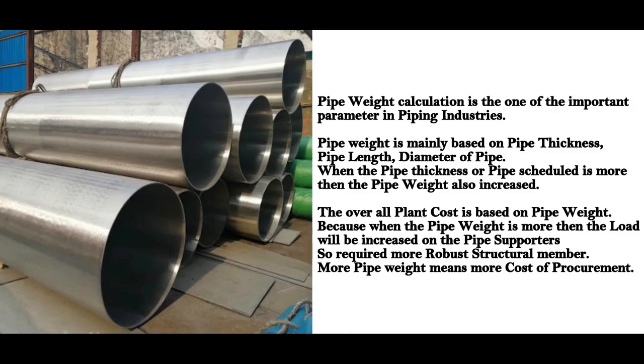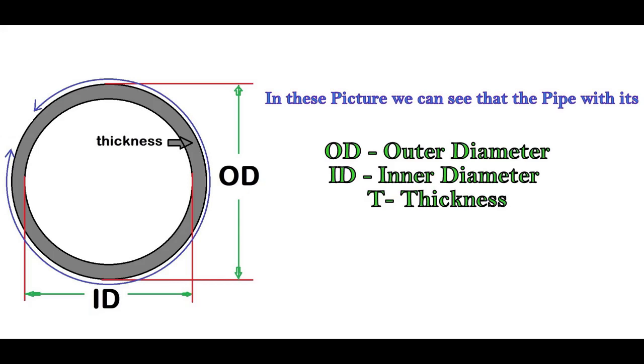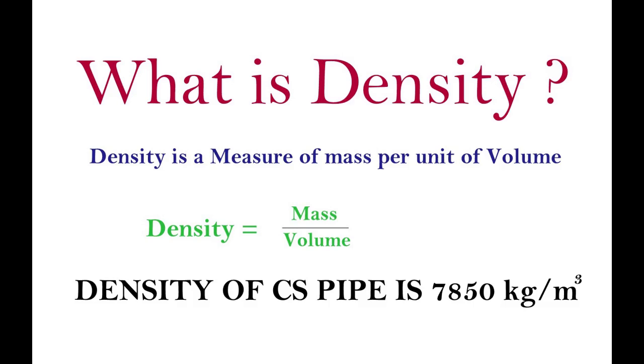Now we will learn how to calculate the pipe weight. Before we calculate, we should know some basics of pipe. OD is outer diameter of a pipe, ID is inner diameter of a pipe, T is thickness of a pipe, and density of the pipe. Density is also a most important parameter to calculate the pipe weight.